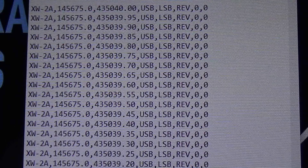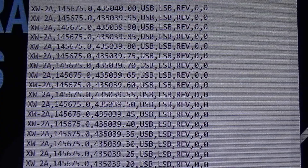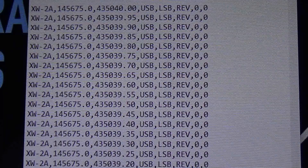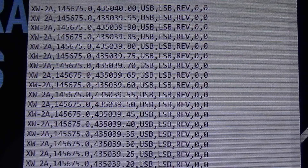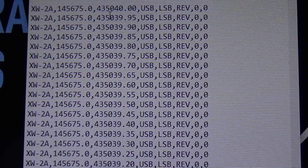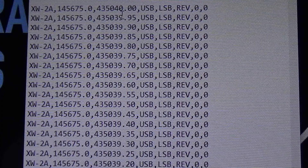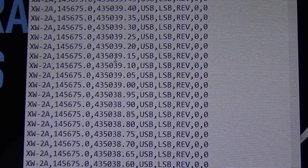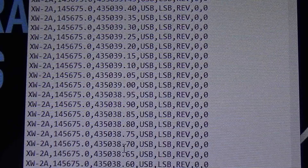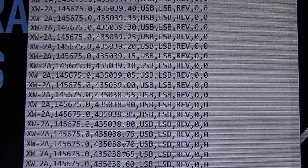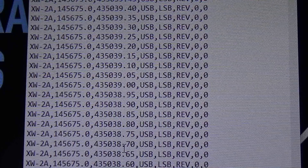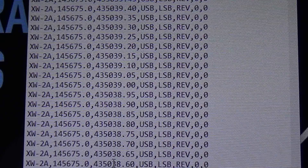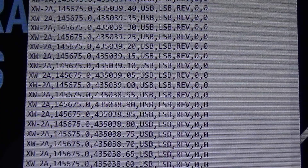Assuming most of you know what a Doppler SQF file is, but for those that don't, this is what Doppler SQF files look like. As you can see, there are multiple lines for one satellite. What I'm looking at here is XW2A. You can see I start at 435.040, which should be the center frequency for the satellite. But I found that in order to get zero beat on the satellite — meaning when you transmit up, what you receive coming down sounds natural — I have to use one of these other lines of Doppler SQF to get centered on frequency when the bird is passing over.